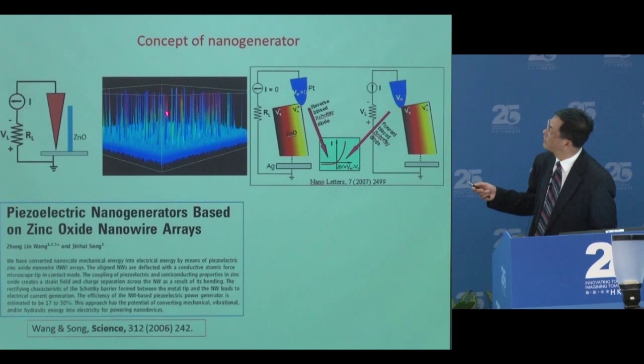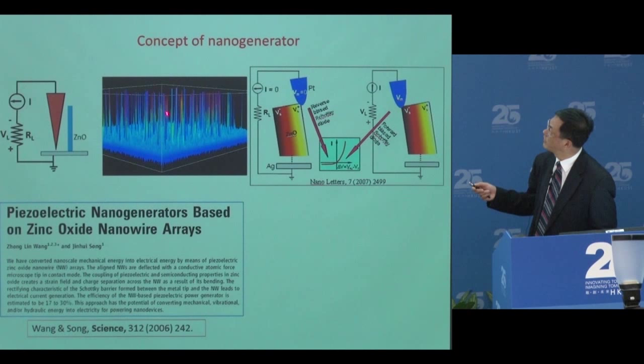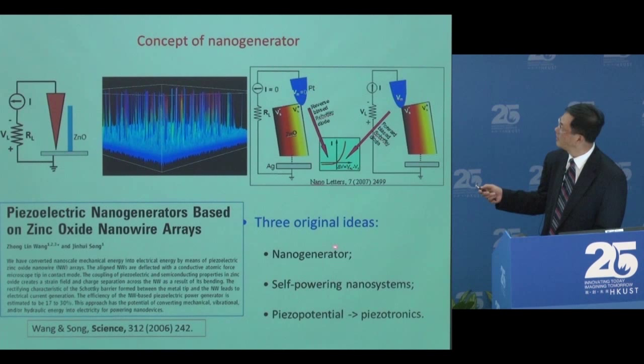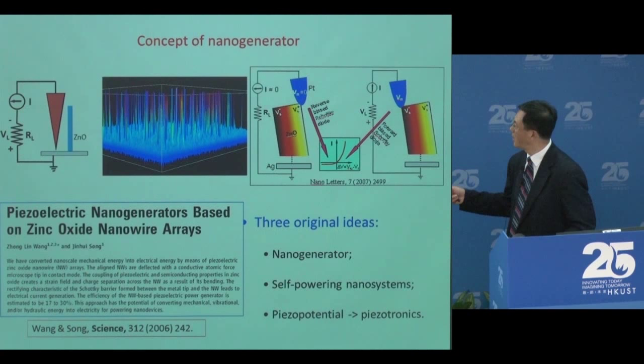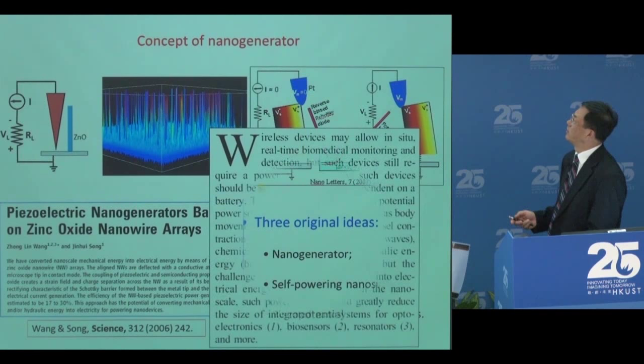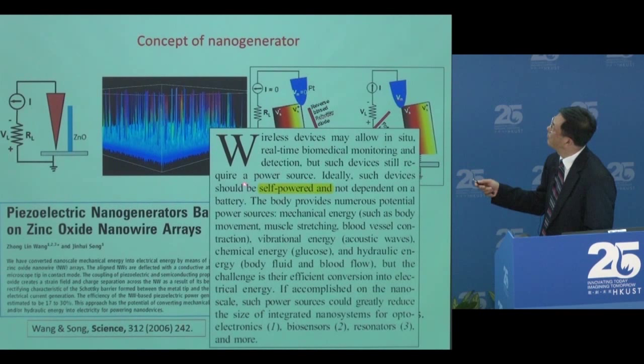We started this work using grown nanowire materials and atomic force microscopy to trigger nanowires, receiving about 5 millivolt output. That paper reported on the idea of the so-called nanogenerator — many people have read this now. We then proposed the idea of the self-powered nanosystem, and later proposed the idea of piezotronics. At the beginning of that paper, I wrote 'self-powered system,' and this has become popular today.